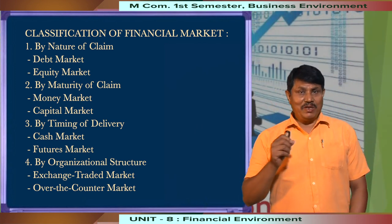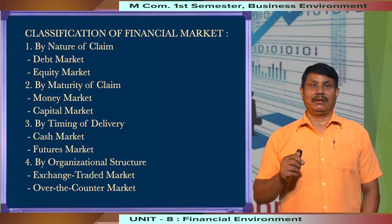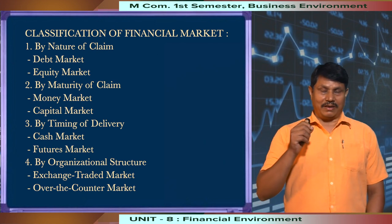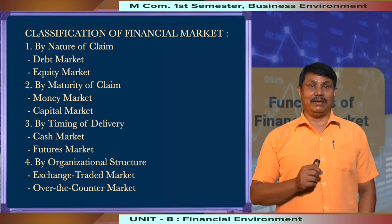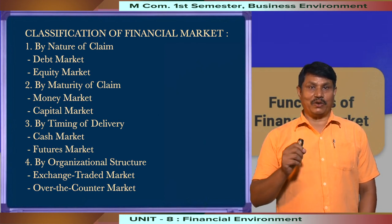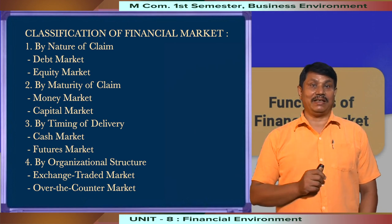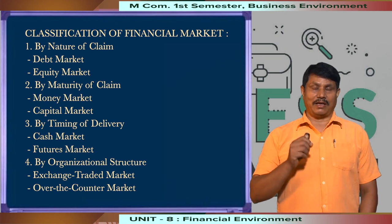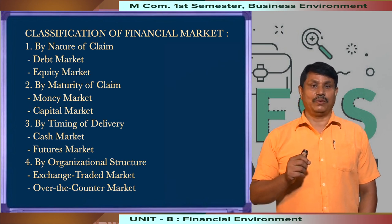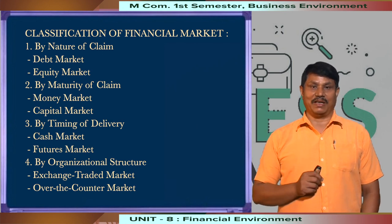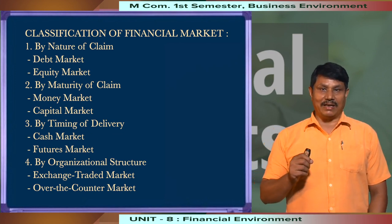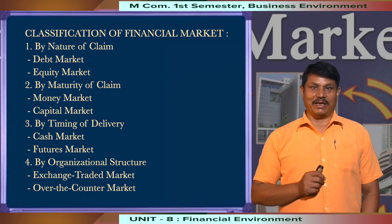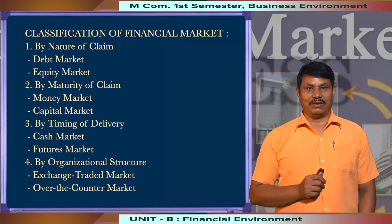From the point of view of timing of delivery, financial markets can be divided into cash market and futures market. In the cash market, trade is completed in real time, whereas delivery of products is taken at a future specified date in the case of futures market. From the point of view of organizational structure, financial markets can also be divided into exchange traded market and over the counter market. Exchange traded market has a centralized system with a standard procedure.